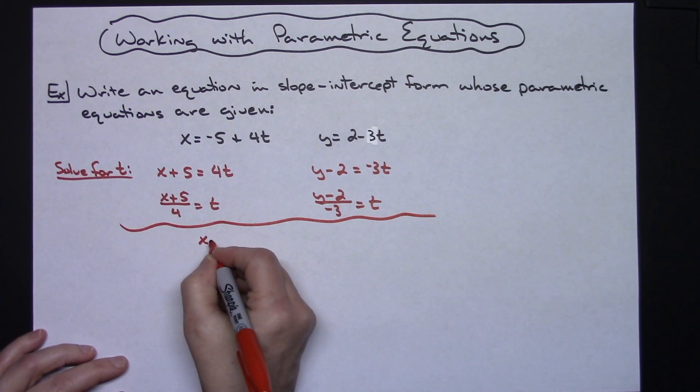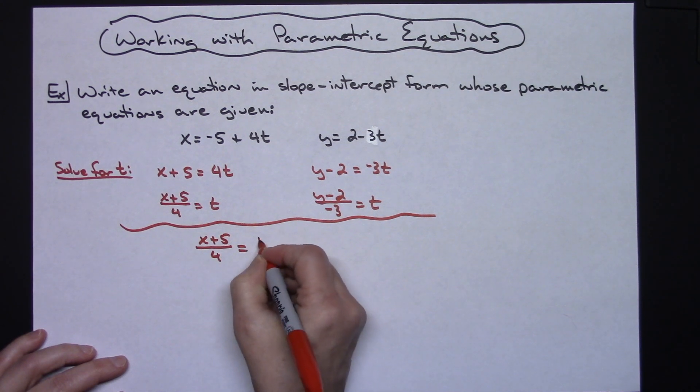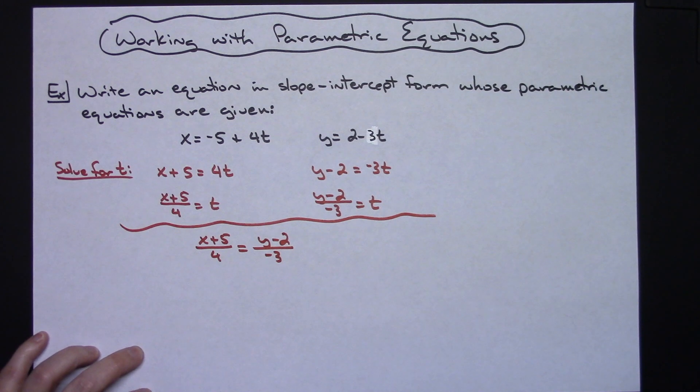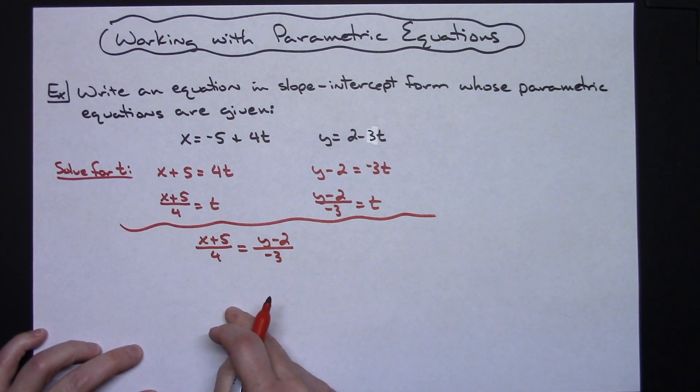So I'll have (x + 5)/4 = (y - 2)/(-3). Now it's a matter of manipulating this equation and getting it into slope-intercept form.